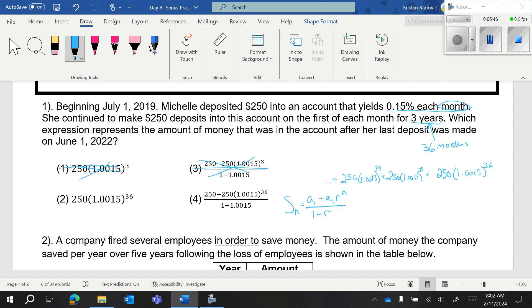Where A sub one is 250. And you have your value of r is, first of all, you are increasing. So this is going to be one plus r, which is one plus your rate, which is one plus 0.015, which is 1.015. And how long are you doing this for? You're doing it for three years. So n is 36 months.